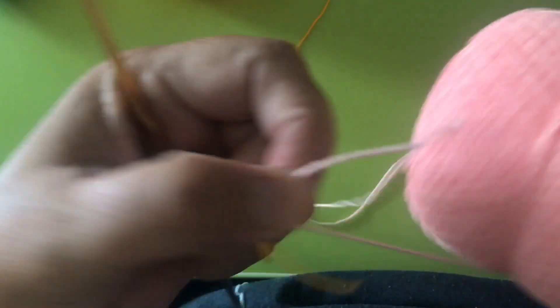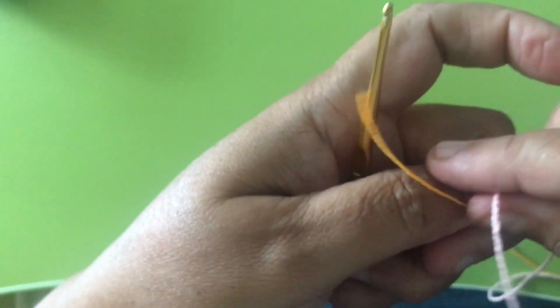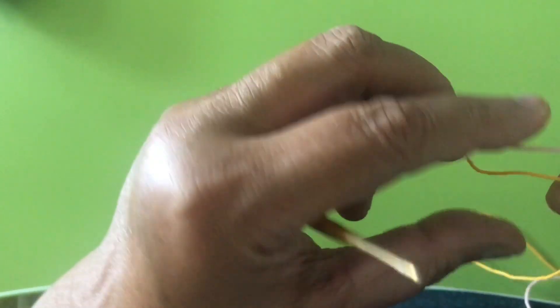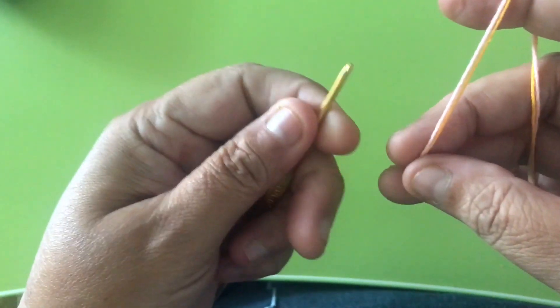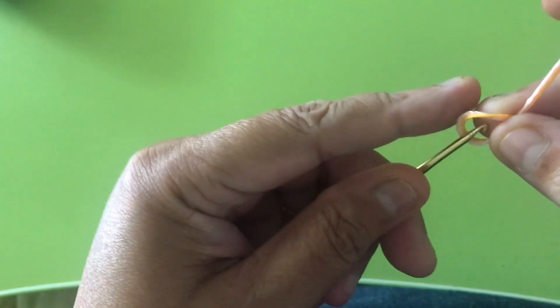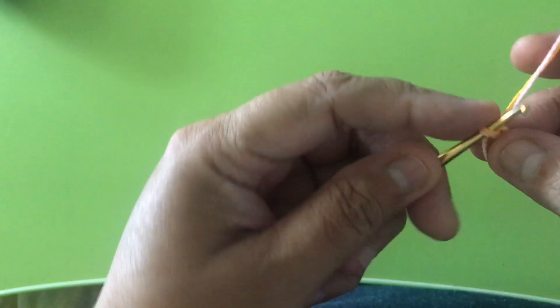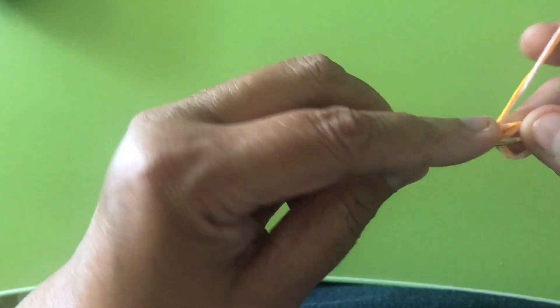I'm going to do a magic ring. Do eight single crochet.